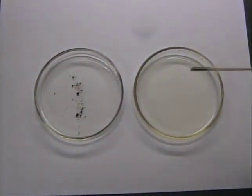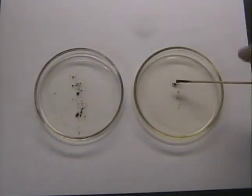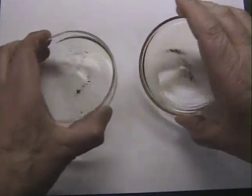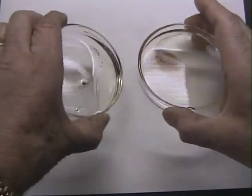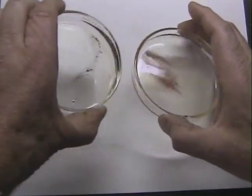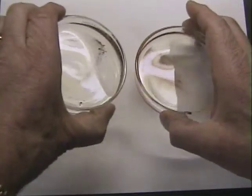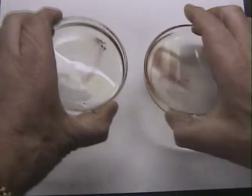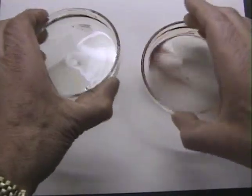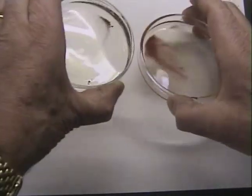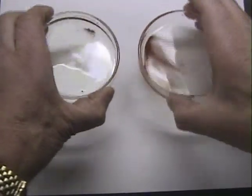Now with some gentle agitation to move it around, what you'll begin to see quickly is on the right hand side the formulated chain lubricant begins to quickly disperse and suspend the pigments.